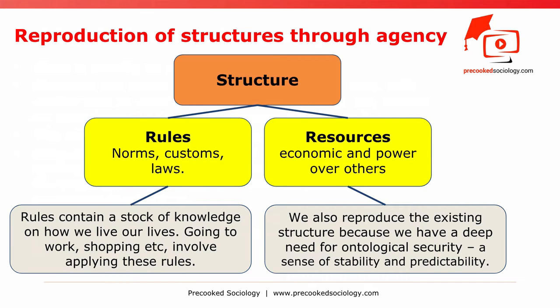Reproduction of structures through agency. Let's look at how structure and action are both important for Giddens. Structure has two elements: one, rules — norms, customs, laws, etc. — and two, resources — economic, like raw materials, and power over others. Rules and resources can either be reproduced or changed through human action.